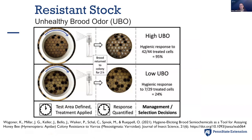Something really new is called UBO, or Unhealthy Brood Odor. It's more fine-tuned — it's not just dead bees, it's unhealthy bees. Rather than putting liquid nitrogen into the tube, you purchase a product called UBO and spray it on the cappings very gently. Only two hours later, you go back and see what they're removing. A high UBO score shows those pupae have been uncapped and will be removed very soon. A low UBO score means these would not be resistant bees. This is brand new — just this season available to beekeepers.